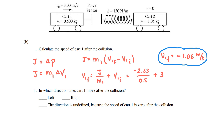In part BII, we're asked in which direction cart 1 moves after the collision. By looking at the final velocity calculated in part BI, we know that because the velocity is negative, cart 1 will move to the left after the collision. This is a case where we're not asked to justify our selection — we just need to put the check mark next to left.